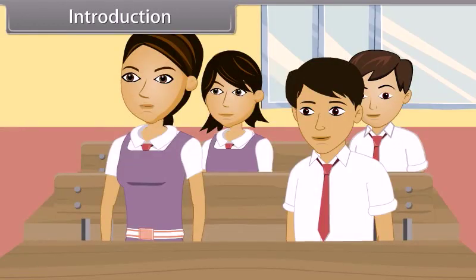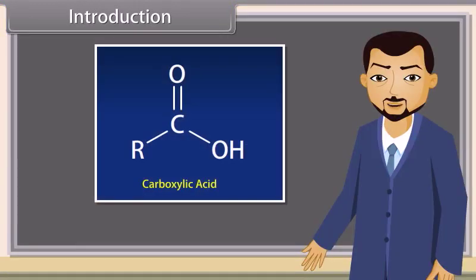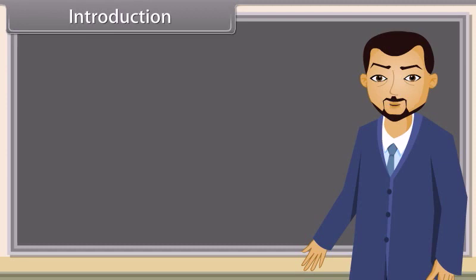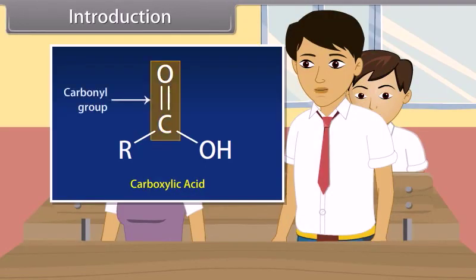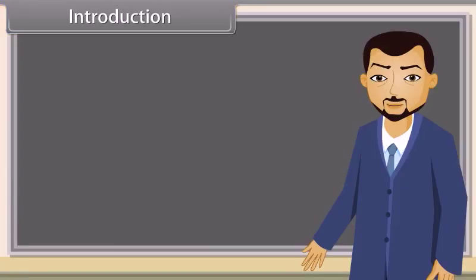Teacher, what are carboxylic acids? Carboxylic acids are the organic compounds which contain carboxyl group. Who will tell me what is carboxyl group? Carboxyl group consists of carbonyl group and hydroxyl group. Very good, Ramesh. In this lesson, we will learn more about carboxylic acids.